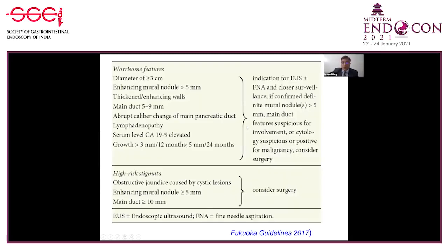You should refer to the Fukuoka guidelines, published by the International Association of Pancreatology in Pancreatology 2017. Features of IPMN are categorized into worrisome features and high risk features. Worrisome features: cyst diameter more than three centimeters, enhancing mural nodule more than five millimeters, thickened enhancing walls, main duct five to nine millimeters, elevated CA 19-9, or growth more than three millimeters in one year. High risk features: jaundice, enhancing mural nodule more than five millimeters, or main duct more than ten millimeters. Worrisome features warrant close follow-up and possible EUS and FNA; high risk features warrant surgery in most patients.